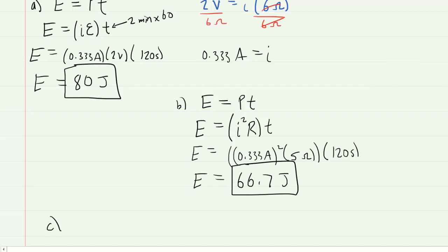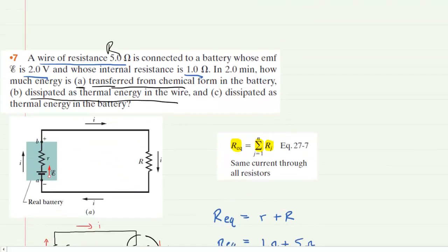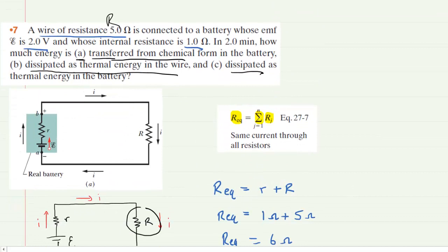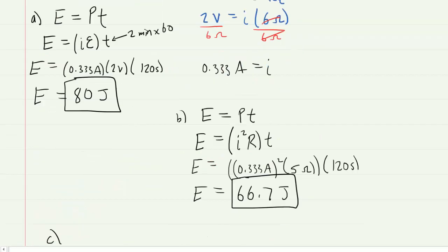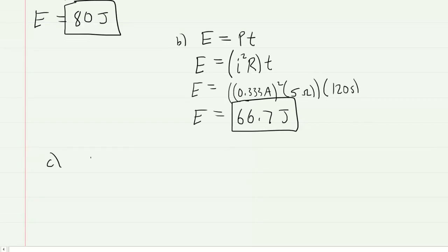Finally, in Part C, we are asked to calculate the total energy dissipated as thermal energy in the battery. Same kind of thing as we did in Part B, but in this case, because they're asking us about the battery, we're going to use the internal resistance of the battery, that's the lowercase r. So we'll have energy is equal to the power, which is the I squared, and then times lowercase r, times time.